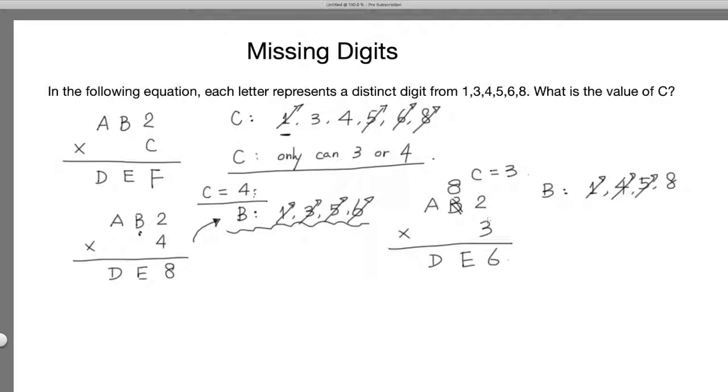And then 3 times 8 equals 24, so E equals 4. And then, for this, you only have choices of—4 and 8 are already used—it only has 1 and 5 left for A and D. And this is obvious. A has to equal 1, and D equals 5. And that is the end of this problem.